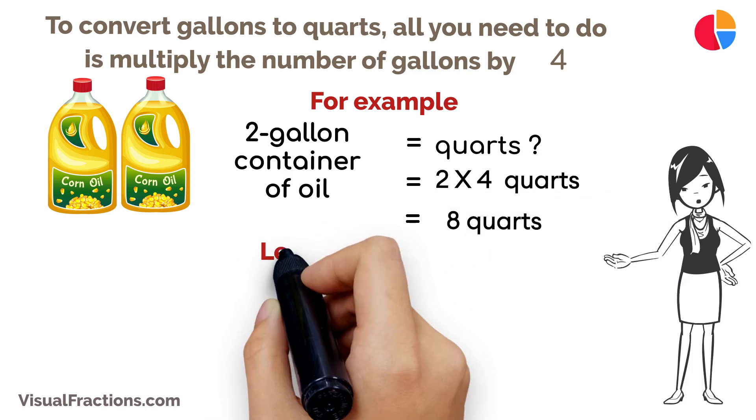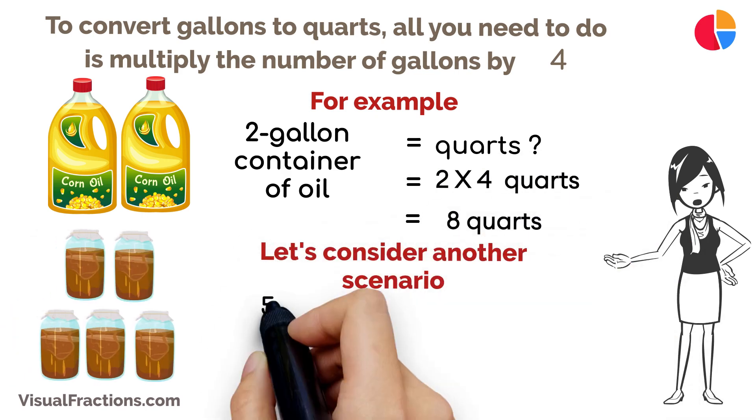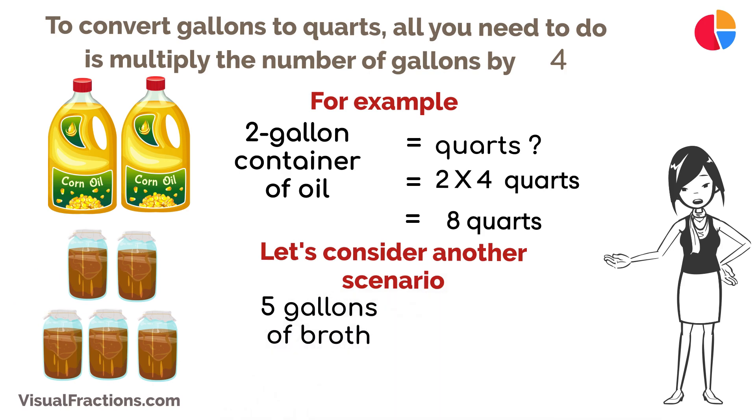Let's consider another scenario: if you're a chef preparing a large batch of soup and you need to measure five gallons of broth in quarts, converting it is straightforward. Just multiply five gallons by four to get 20 quarts.